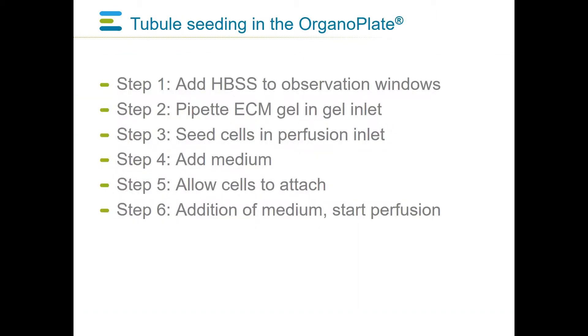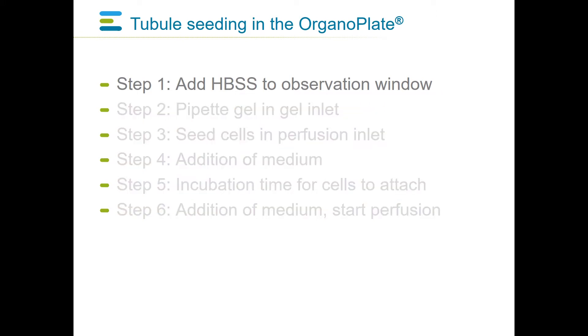Seeding tubules in the organoplate involves six steps. In the first step, HBSS is added to the observation window to ensure proper humidification and to prevent condensation that may interfere with imaging during the experiment.